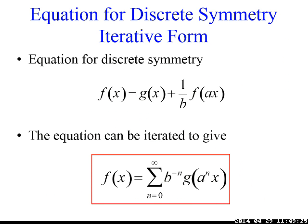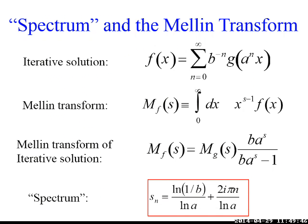A different way to obtain solutions to this equation is to iterate it. As a first iteration you take G, then 1 over B times G of A times x, and so on — you get a series of iterated functions. As far as I know, these are the only solutions, and the iterated procedure gives you an idea of which one. Looking at the spectrum or poles: take the iterative solution, perform a Mellin transform — the analog of a Fourier transform for functions with discrete symmetry — and you see an infinite number of poles. This is another connection: the spectrum of these discrete functions is infinite.